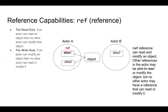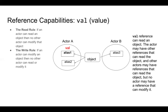A ref alias can read and modify an object. Other references in the same actor may also read or modify the object, but no other actor may have a reference that can read or modify it. Following the read and write rules: alias 2 is allowed to read and write from the object because that doesn't violate either rule. But alias 3 from another actor couldn't read or write from the object because actor A already has an alias that can write to it. A val alias can read an object; the actor and other actors may have references that can read it, but no actor may have a reference that can modify it.